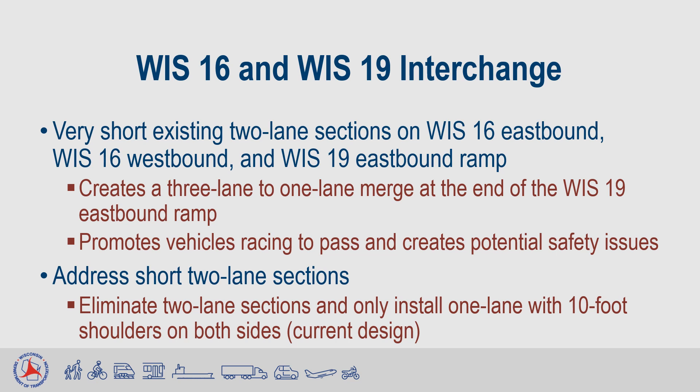At the Wisconsin 16 and Wisconsin 19 interchange, three different options were presented at the July Public Involvement Meeting to address the very short existing two-lane sections on Wisconsin 16 eastbound, Wisconsin 16 westbound, and the Wisconsin 19 eastbound ramp. Based on public input, option three — a reduction of the short two-lane sections to one lane with 10-foot shoulders on both sides — was selected.